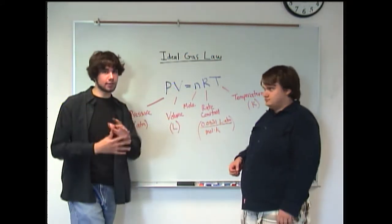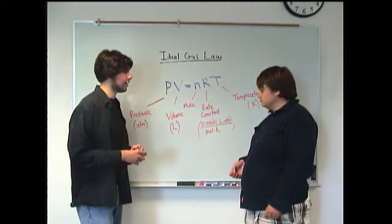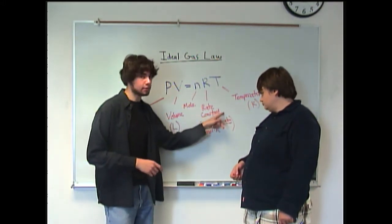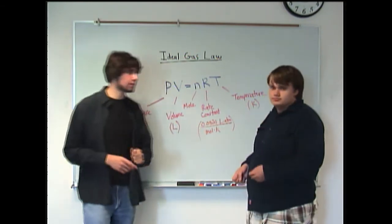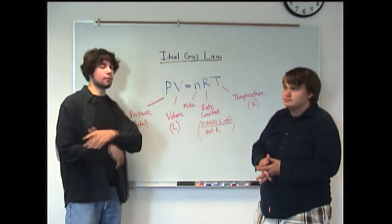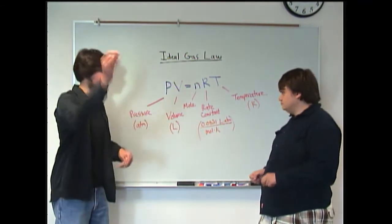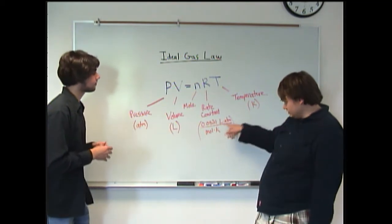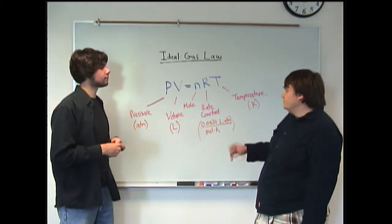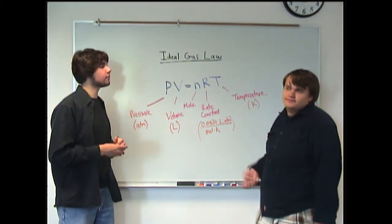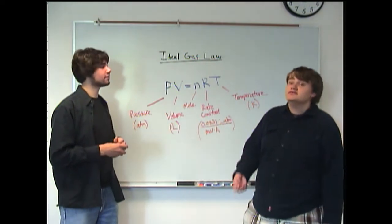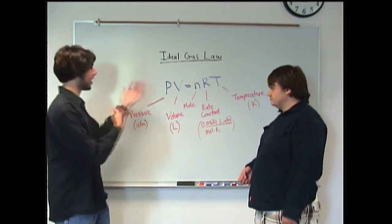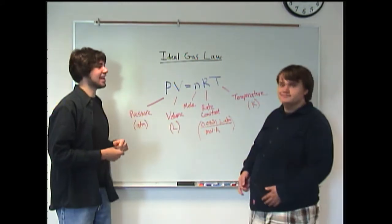Now, the reason why we have to have all those units like that is because of the rate constant here. If you look closely at the units, 0.821 liters times atmospheres over moles times Kelvins. So basically, if you have three of those things and you're trying to figure out the other one, the rate constant will cast out the units you don't want and leave you with the units that you do want. So all the other ones go away and you'd be left with, say, liters. It's a nice way to clean things up. That's why it's called the ideal gas law.